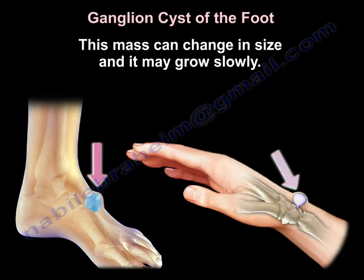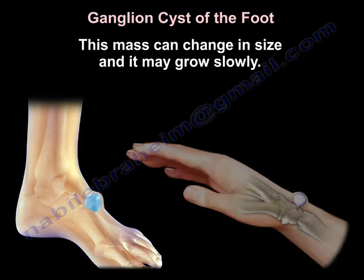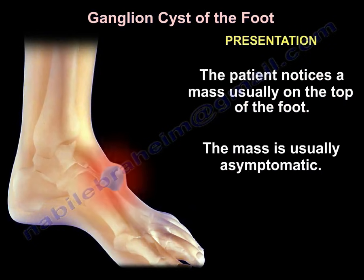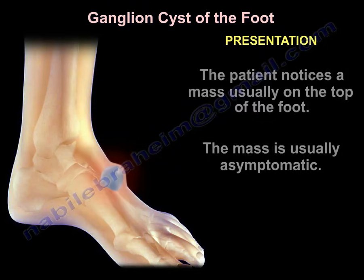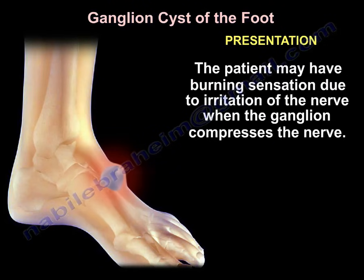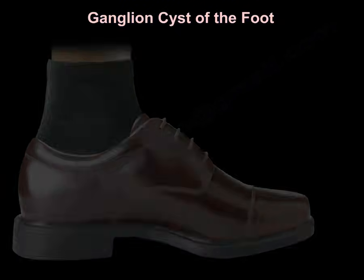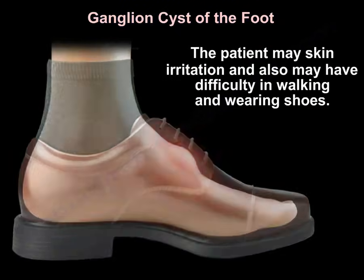This mass may change in size and may grow slowly. When it occurs at the foot, the patient will notice a mass usually on the top of the foot. The mass is usually asymptomatic. The patient may have a burning sensation due to irritation of the nerve when the ganglia compresses the nerve. The patient may also have skin irritation and difficulty in walking and wearing shoes.